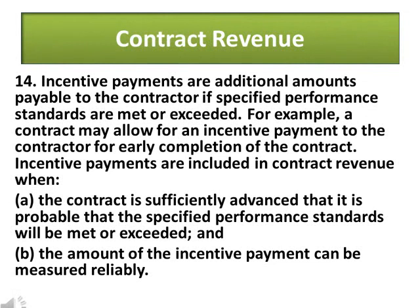Para 14: Incentive payments are additional amounts payable to the contractor if specified performance standards are met or exceeded. For example, a contract may allow for an incentive payment to the contractor for early completion of the contract. Incentive payments are included in contract revenue when: A) the contract is sufficiently advanced that it is probable that the specified performance standards will be met or exceeded; and B) the amount of the incentive payment can be measured reliably.